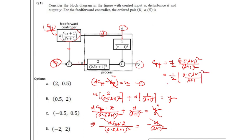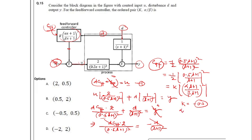Comparing this transfer function for feed forward control, this is in the form k times (αs + 1) upon (βs + 1). Comparing, the value of k is found to be minus 0.5, alpha is found to be 0.5, and beta is found to be 1. So k equals minus 0.5 and alpha upon beta equals 0.5. This answer is correct.